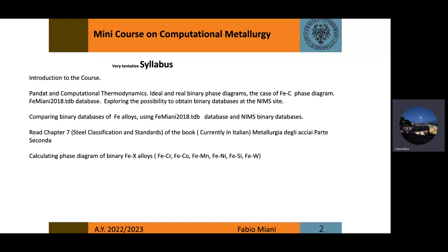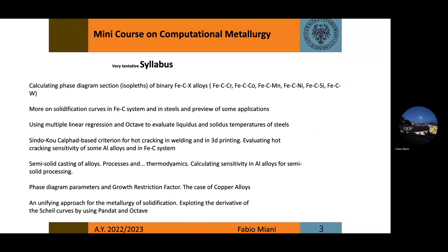We will make calculations for binary phase diagrams — not only iron-carbon, but also iron-chromium, iron-cobalt, iron-manganese, iron-nickel, iron-silicon, and iron-tungsten. We will also consider ternary systems including iron-carbon and a third element: chromium, cobalt, manganese, nickel, silicon, and tungsten.